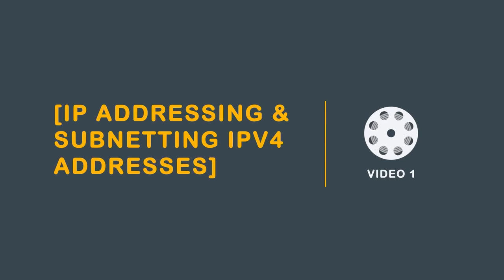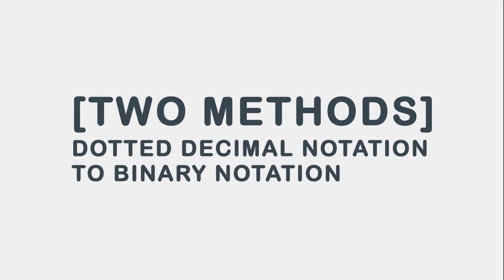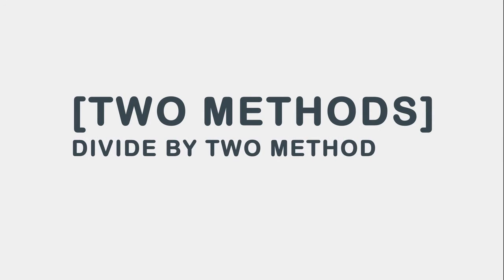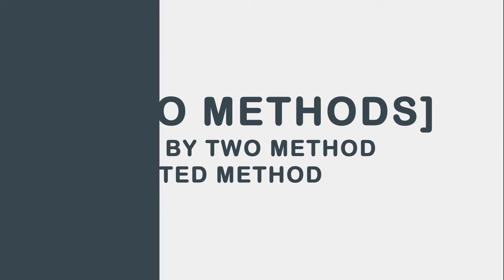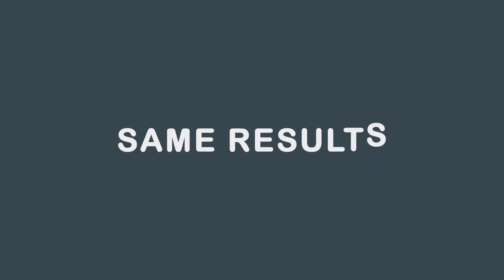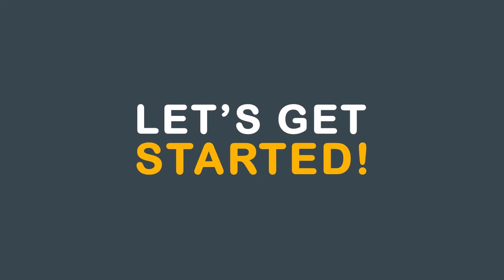Greetings, and welcome to the first video on IP addressing and subnetting IPv4 addresses. Today we will demonstrate two different methods for converting dotted decimal notation to binary notation and vice versa. The first method is the divide by two method. The second, and more popular, is the weighted method. Both methods produce the same results, so if you grasp one better than the other, focus on that method. Let's get started.